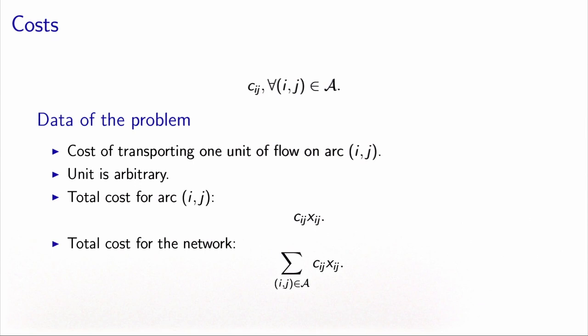Cost is another piece of data associated with the network. A cost Cij will be associated with each arc in the network, and it corresponds to the cost of transporting one unit of flow on that arc. The total cost for arc ij is the unit cost times the amount of flow — we assume proportionality here.